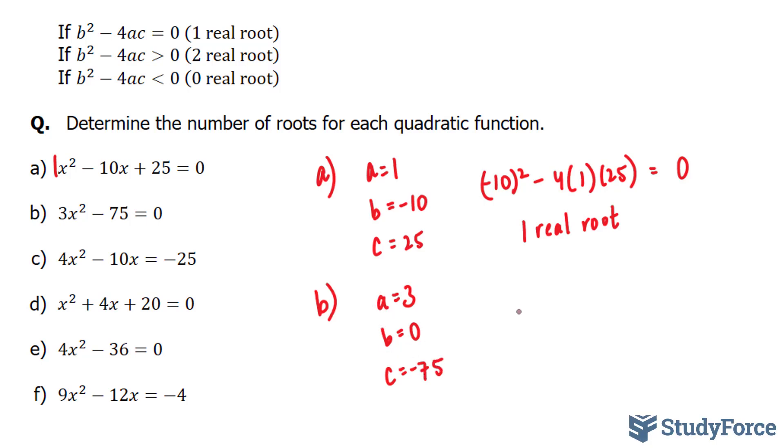Once again, plugging these values in, b to the power of 2 minus 4 times 3 times negative 75. Now notice, 4 times 3 times 75 will give us a number greater than 0, and negative 4 times negative 75 will give us a positive value. So without using our calculator, we know that there will be two real roots.